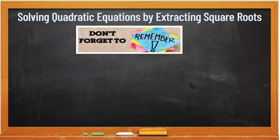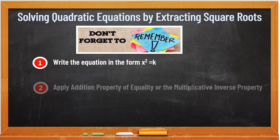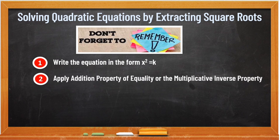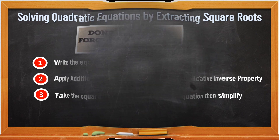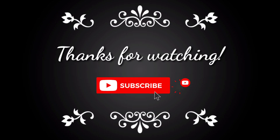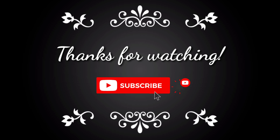Now, let's recall the steps in solving quadratic equations by extracting square root. First: write the equation in the form x squared is equal to k. Then apply addition property of equality or the multiplicative inverse property — kailangan kasi x squared is equal to k yung ating equation. Then take the square root of both sides of the equation. Then simplify. Yan yung mga dapat nating tandaan sa pagsusolve ng quadratic equations by extracting the square root. Next time, the next topic is about solving quadratic equations by factoring — aside sa extracting the square root, pwede rin tayong mag-solve by factoring. See you again next!